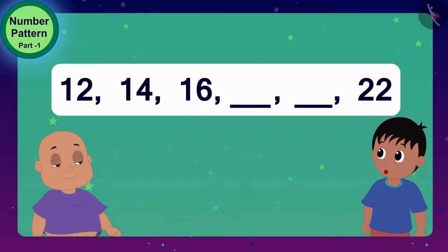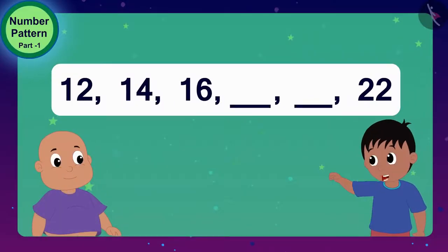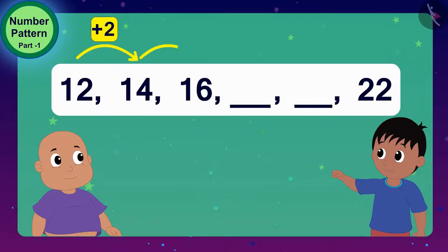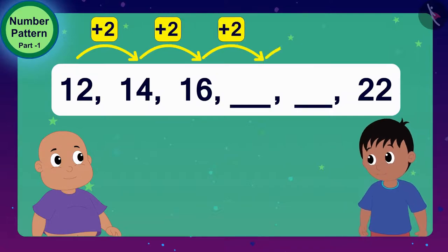Look, Bablu, I got the rule of these numbers. When 2 is added to each digit, the next digit is found. And Bablu, do you know, such groups of numbers in which numbers follow a particular rule, we call them number patterns.